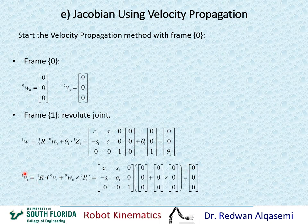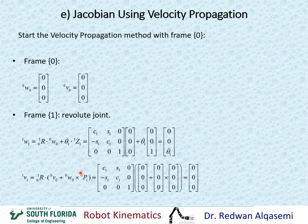For the linear velocities of frame 1 relative to frame 1, we take the transpose of R0,1 from the transformation matrix and place it here. Between two brackets we have V0,0, which we found from frame 0. Then we add omega 0,0 cross product with P1 relative to 0. P0,1 is the position of frame 1 relative to frame 0 from the fourth column of T0,1, which was 0, 0, 0. So we end up with 0, 0, 0 for the linear velocities of frame 1 relative to frame 1.